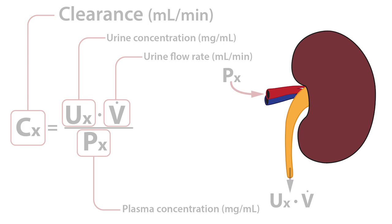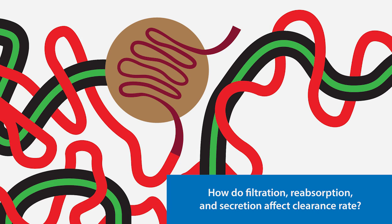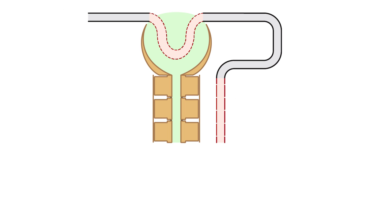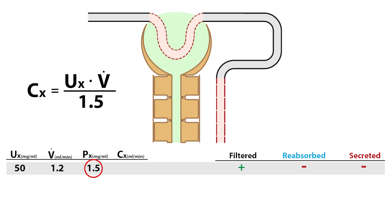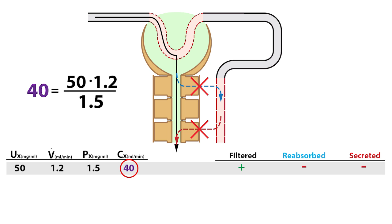With this in mind, let's examine how filtration, reabsorption, and secretion affect clearance rates. For example, if the plasma concentration for substance X is 1.5 mg/mL, the urine concentration is 50 mg/mL, and the urine flow rate is 1.2 mL/min, and that substance is only filtered — not secreted and not reabsorbed — then the clearance rate will be 40 mL/min.